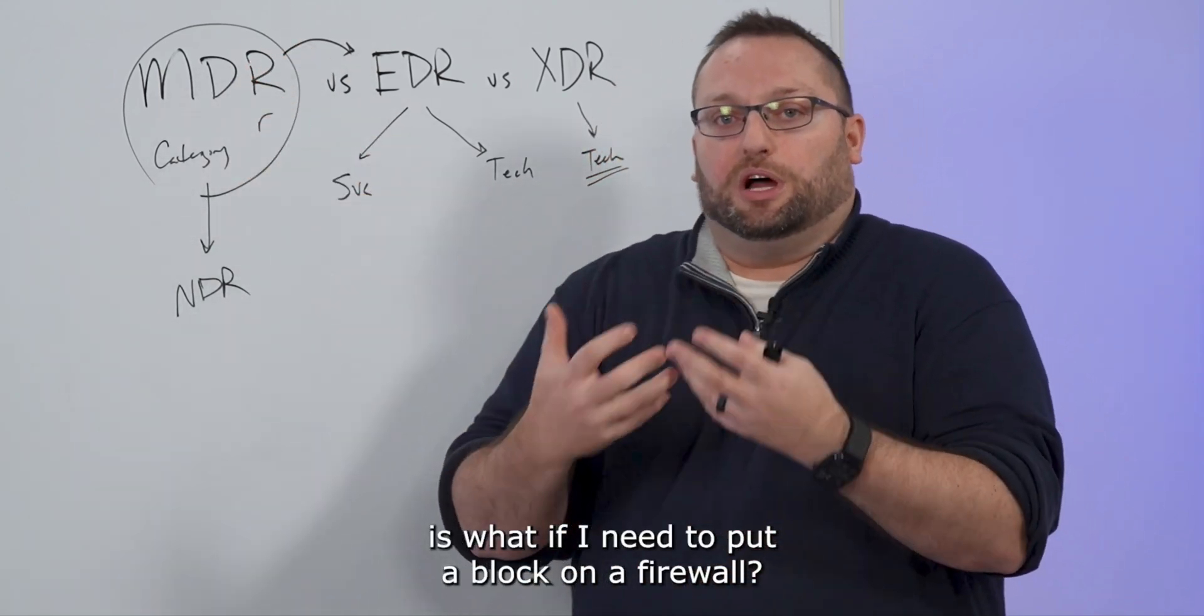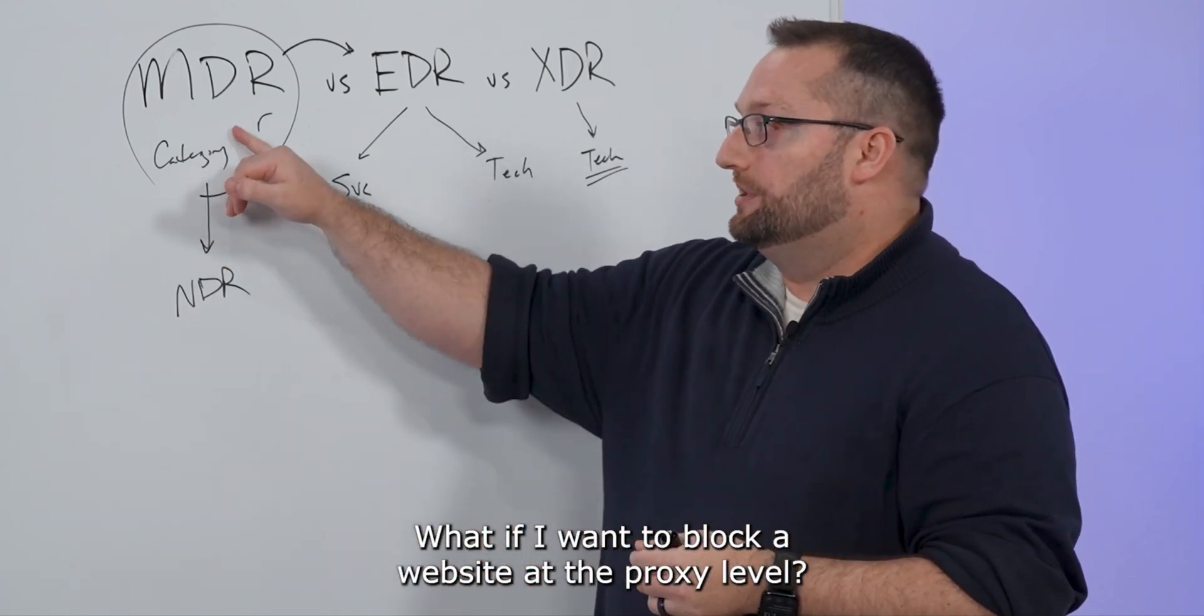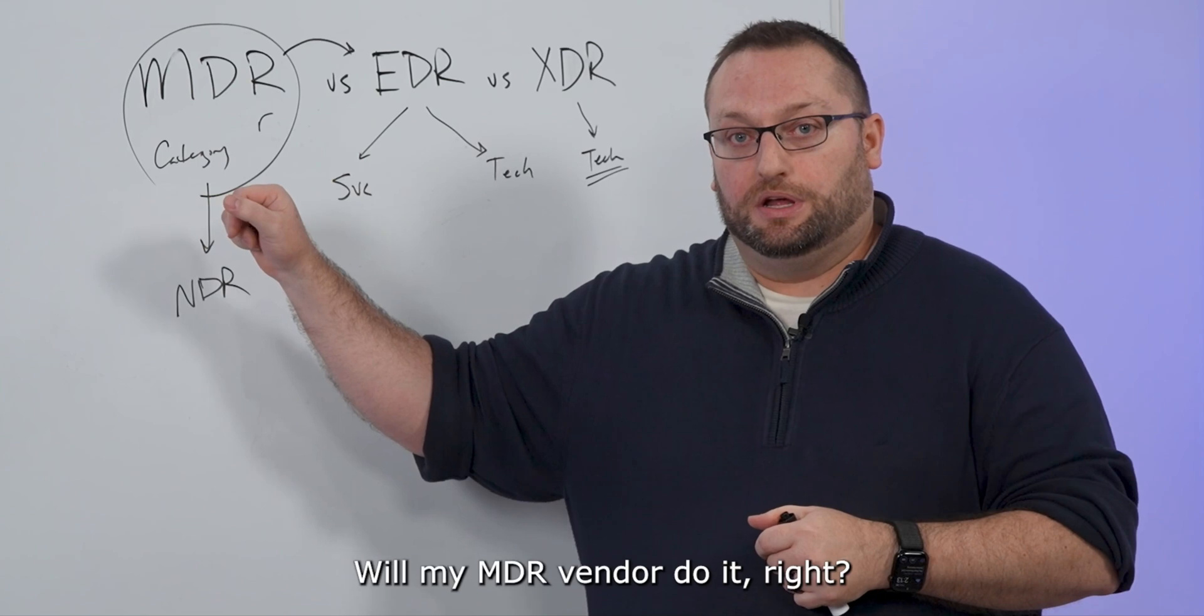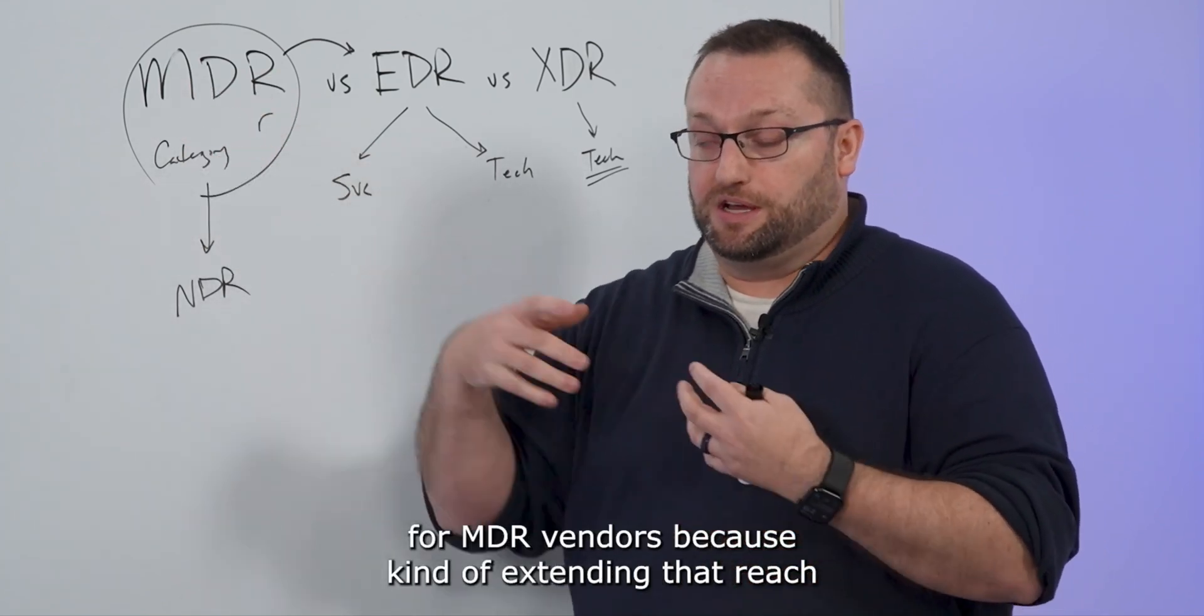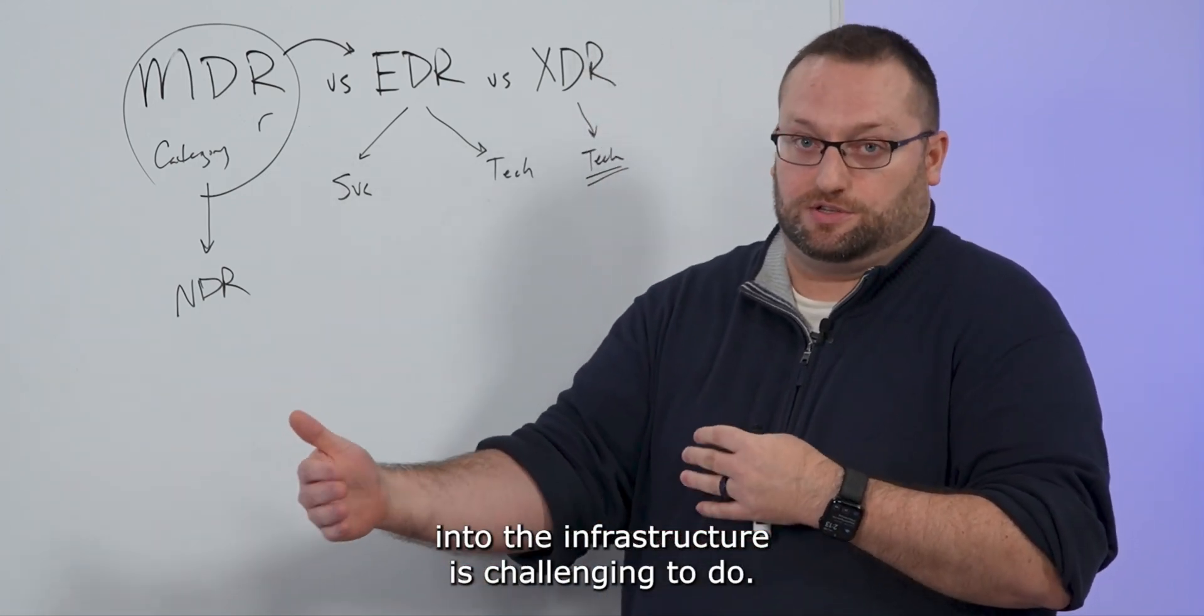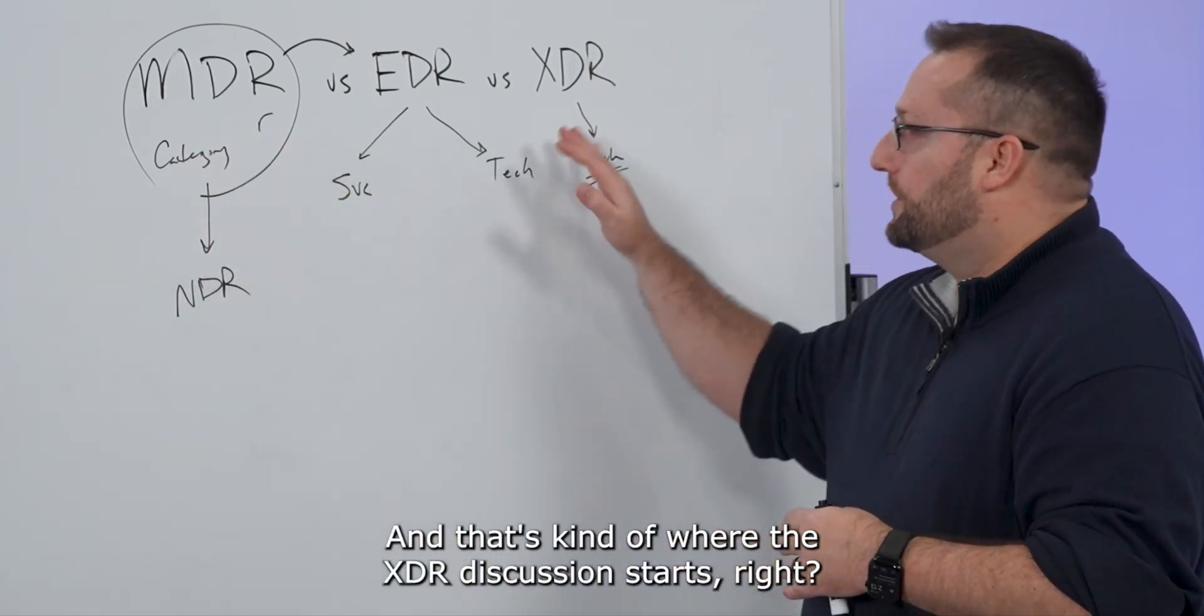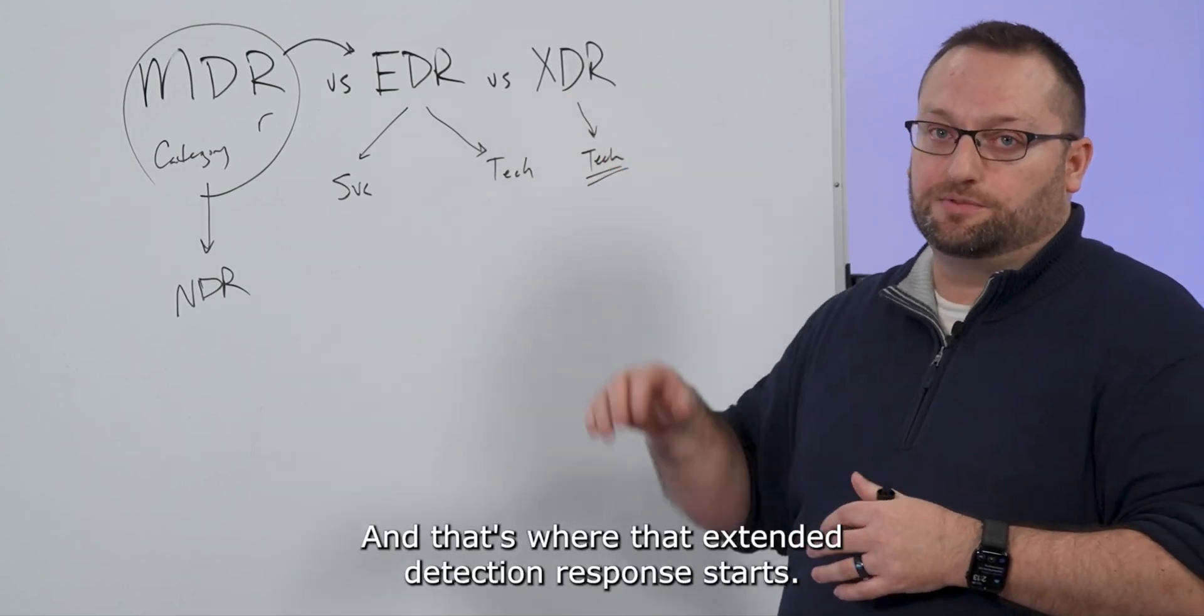And so the challenge that we have is, what if I need to put a block on a firewall? What if I want to block a website at the proxy level? Will my MDR vendor do it? And historically, that answer has been challenging for MDR vendors, because extending that reach into the infrastructure is challenging to do. And that's kind of where the XDR discussion starts. And that's where that extended detection response starts.